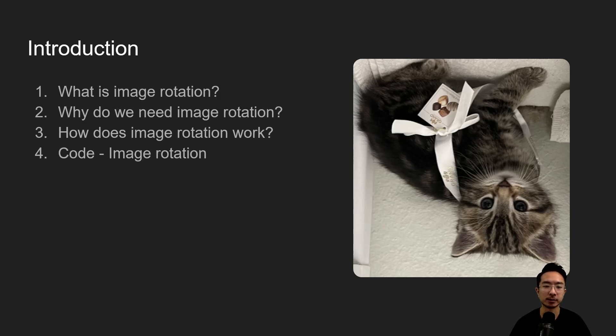In this video we're going to talk about image rotation in OpenCV using Python. We'll start by discussing what is image rotation, why do we need it, how does it work, and then jump into a coding example. By the end of this video we'll be able to see how we could rotate an image and turn it upside down like we see here on the right.